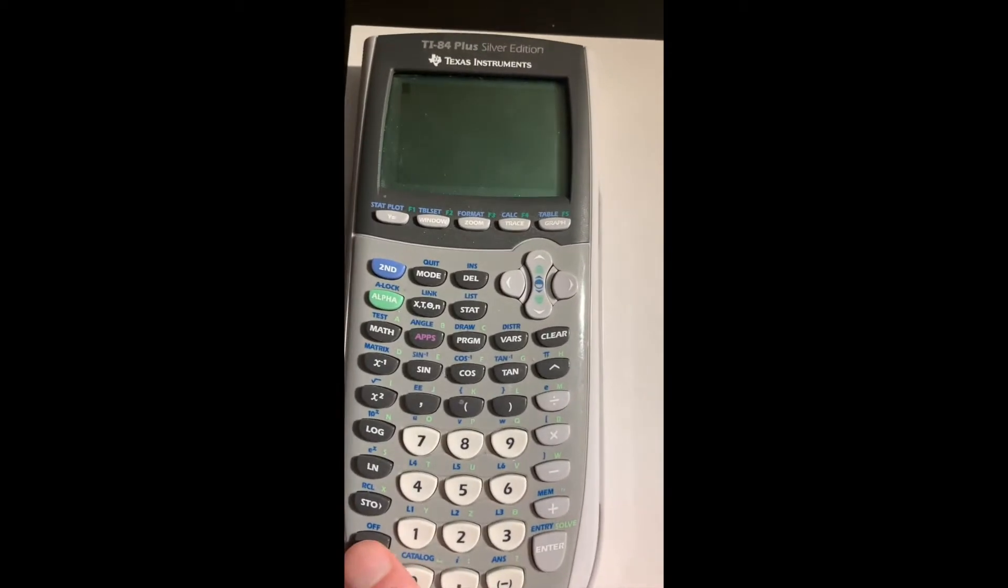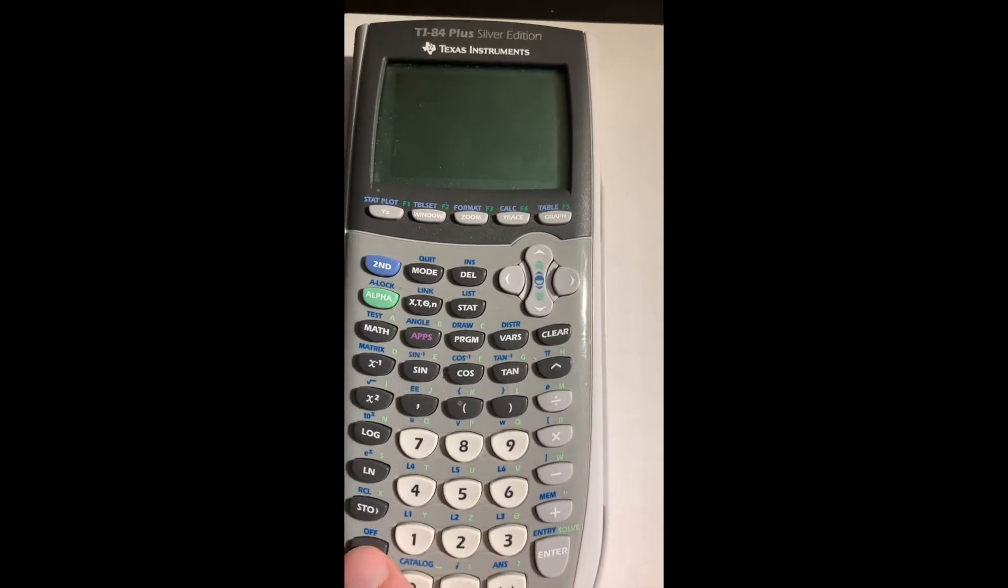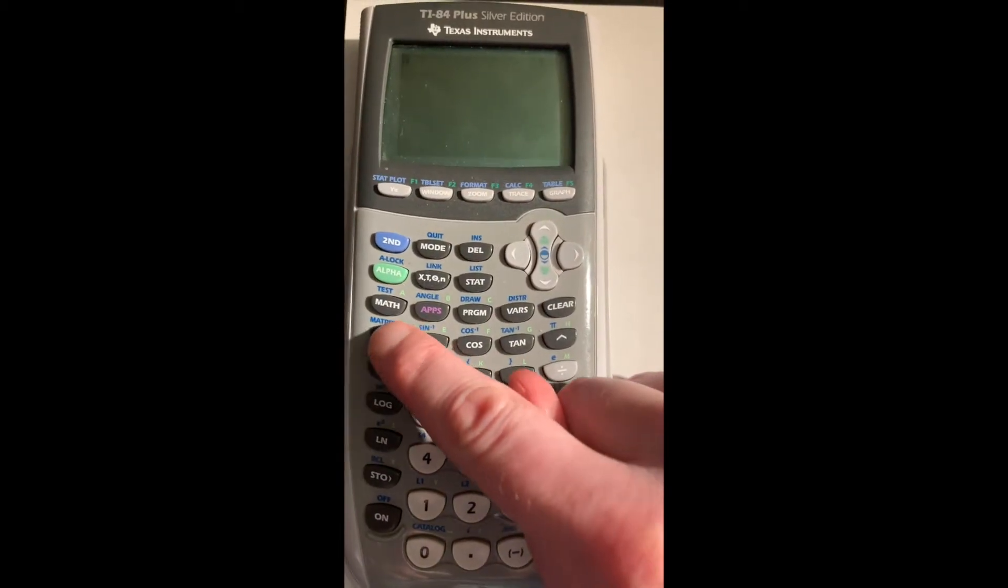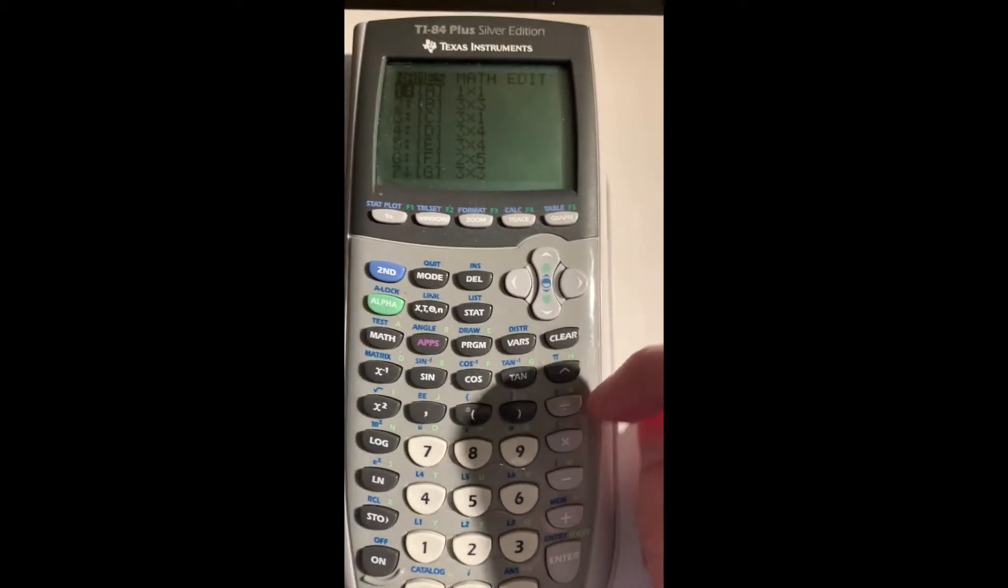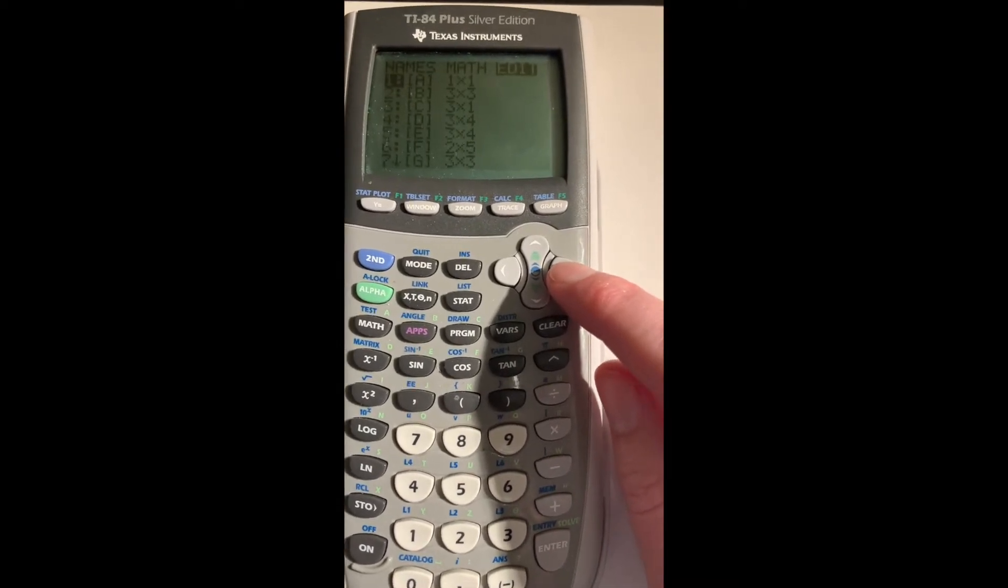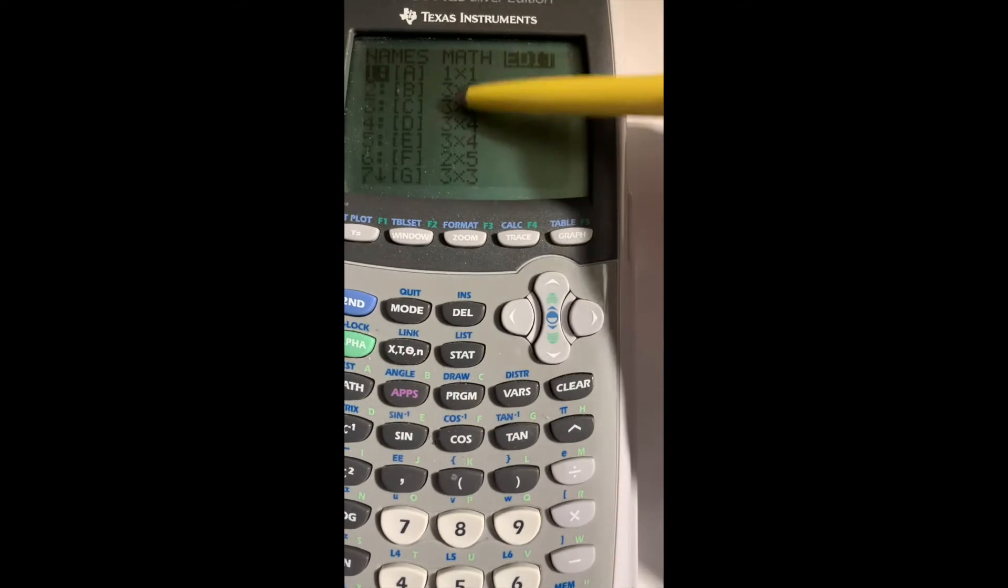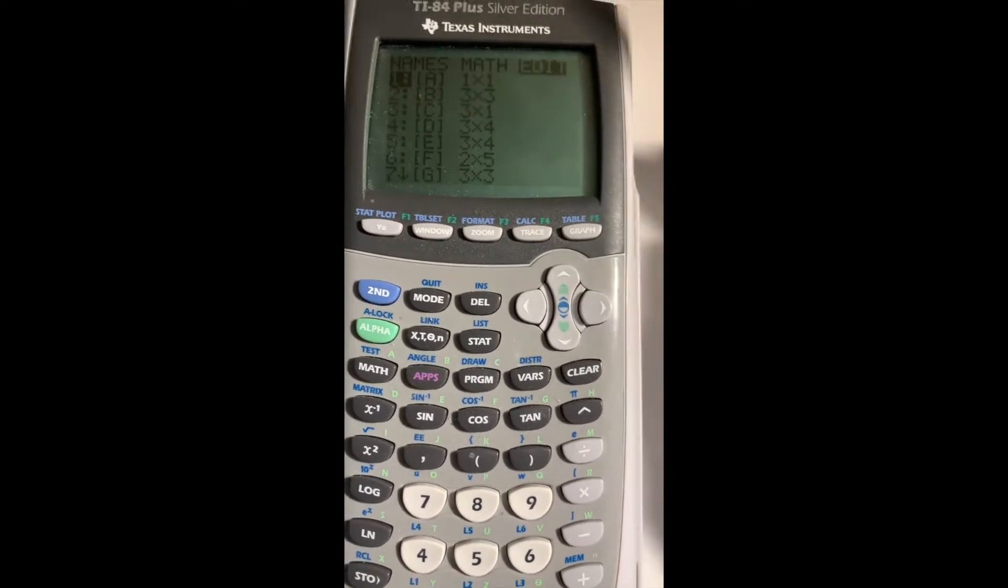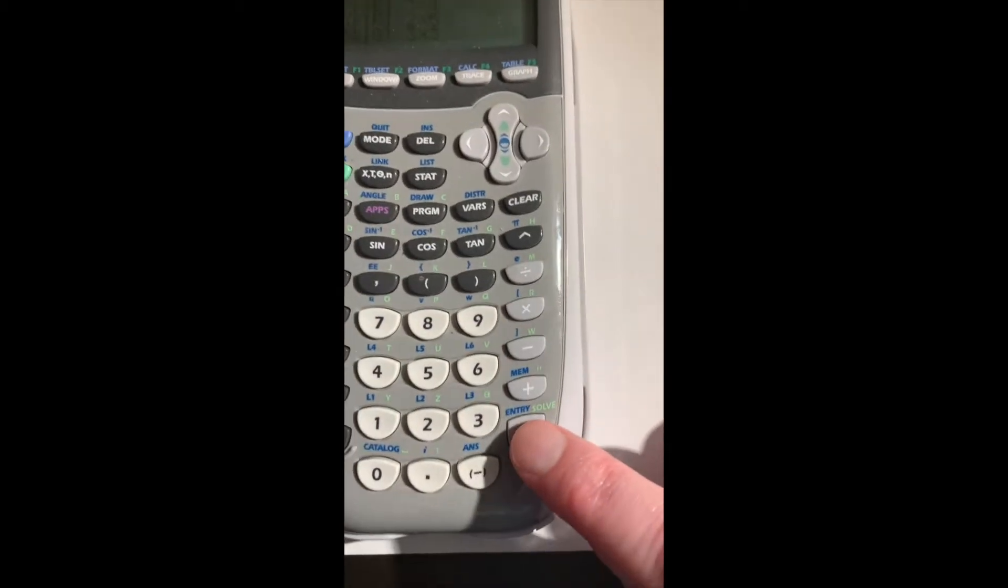We turn the calculator on and hit the second function button, then x to the minus 1 to get into the matrix menu. Use the arrow key to go over to the edit menu, and you've got a selection of matrices here you can choose from. I'm going to choose the first one, number 1, so I hit enter.